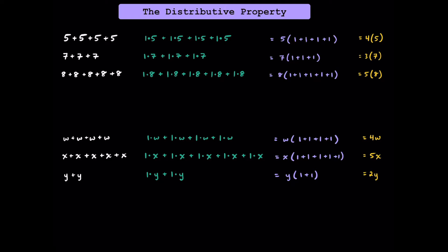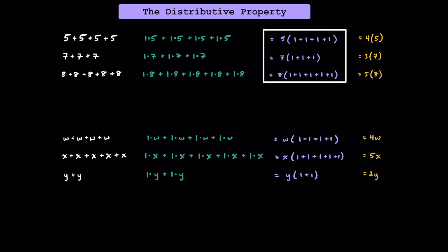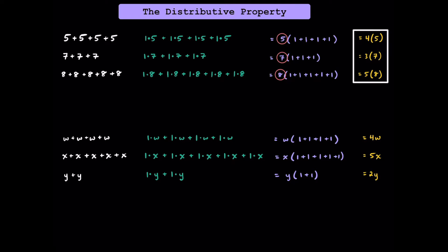Let's talk about the distributive property on a deeper level. Here we have three simple addition problems. Because they're repeated addition, we can rewrite them as multiplication. In algebra, there's something called the identity property — if you multiply something by 1, the value doesn't change. The ones here represent that we have 1 five plus 1 five plus 1 five plus 1 five. Each term has a 5, 7, or 8 in common, and since those are the GCF of each expression, we can factor them out and write the ones inside the parentheses. Adding the ones together, we can see where these multiplication problems come from.